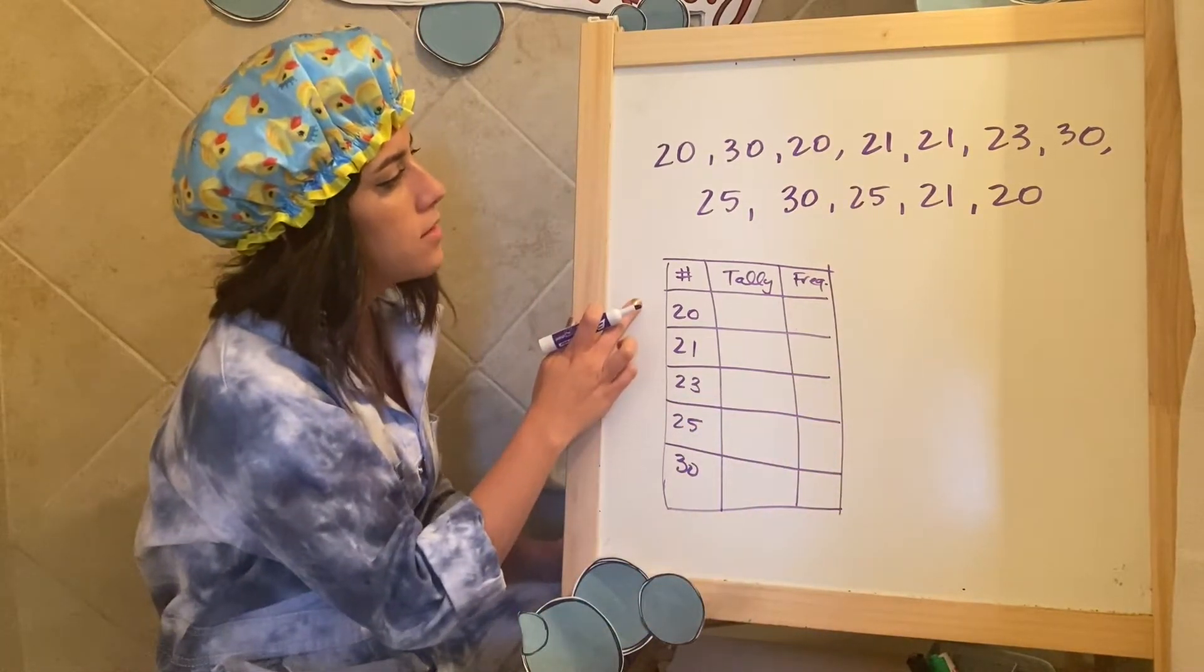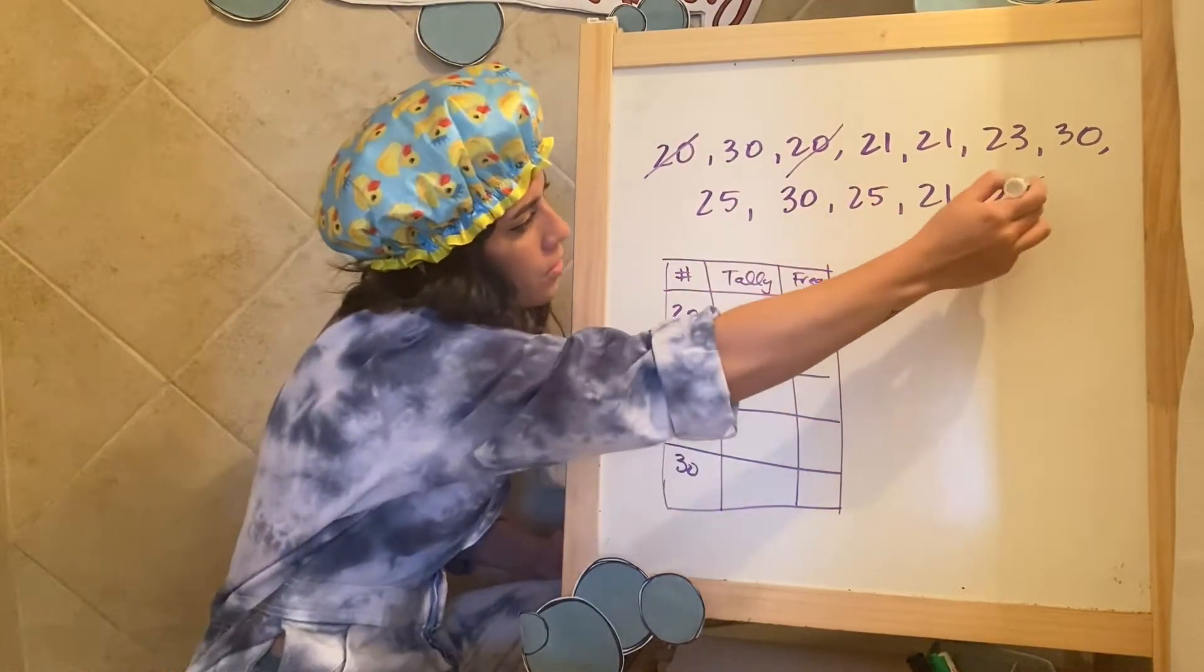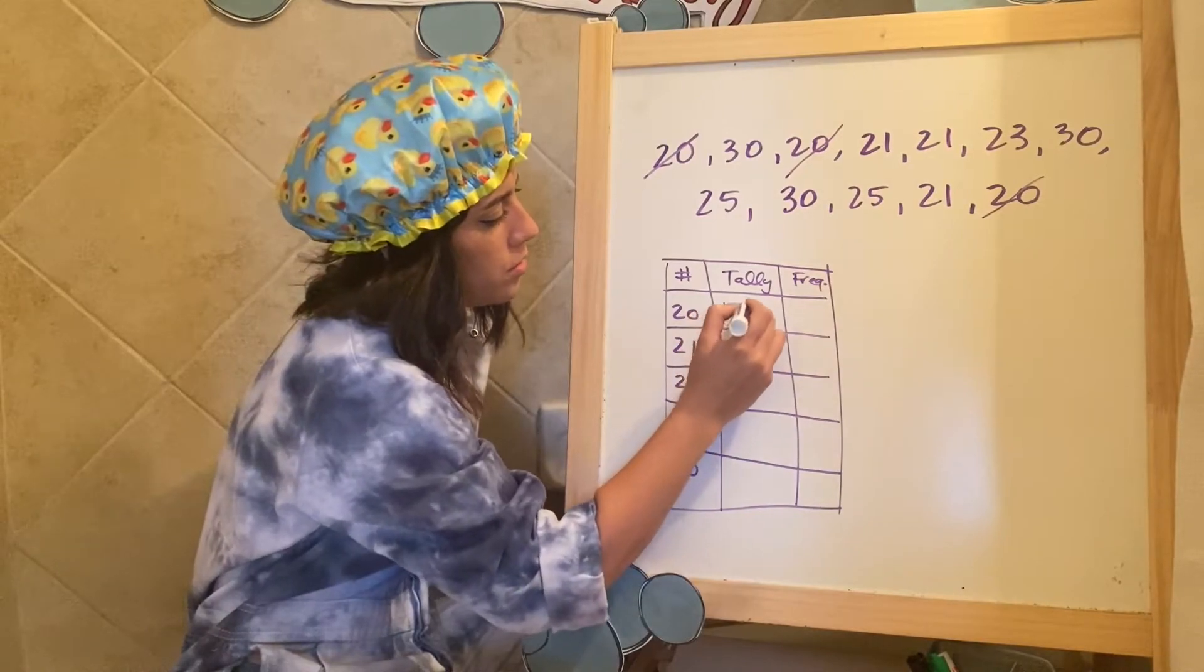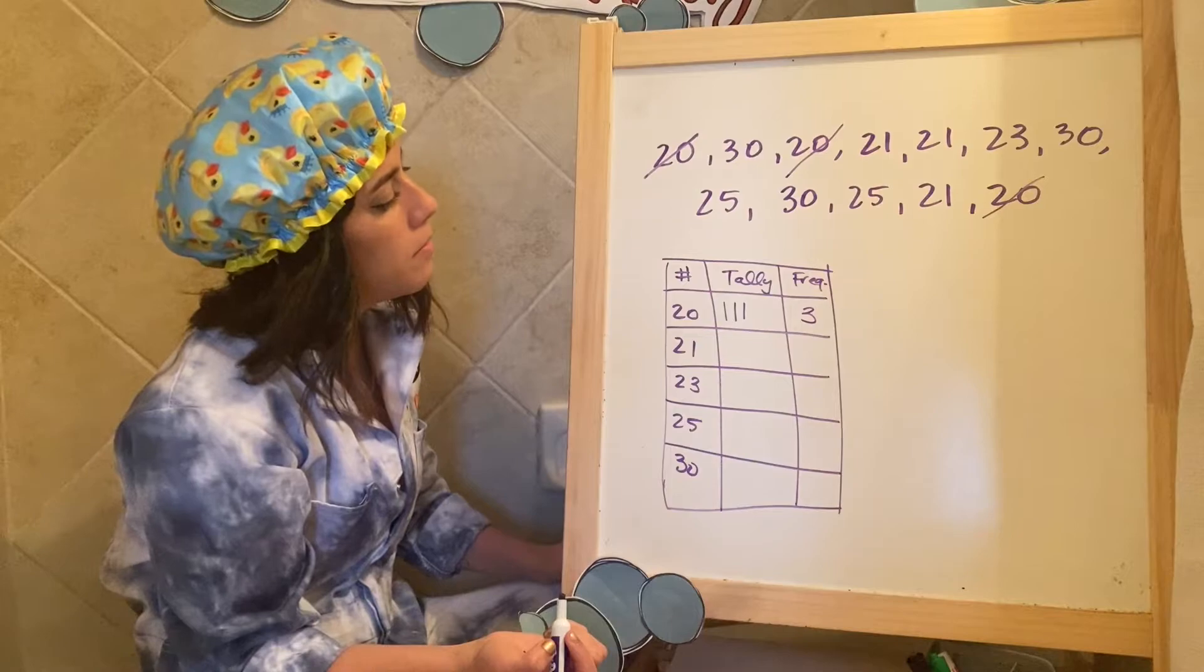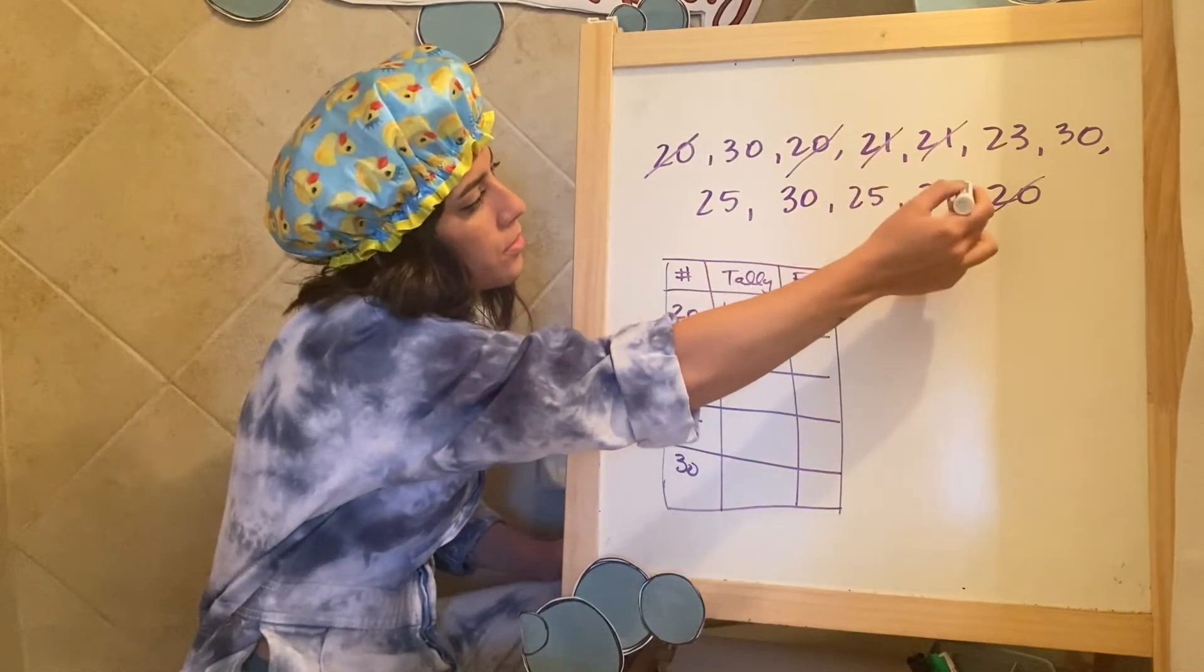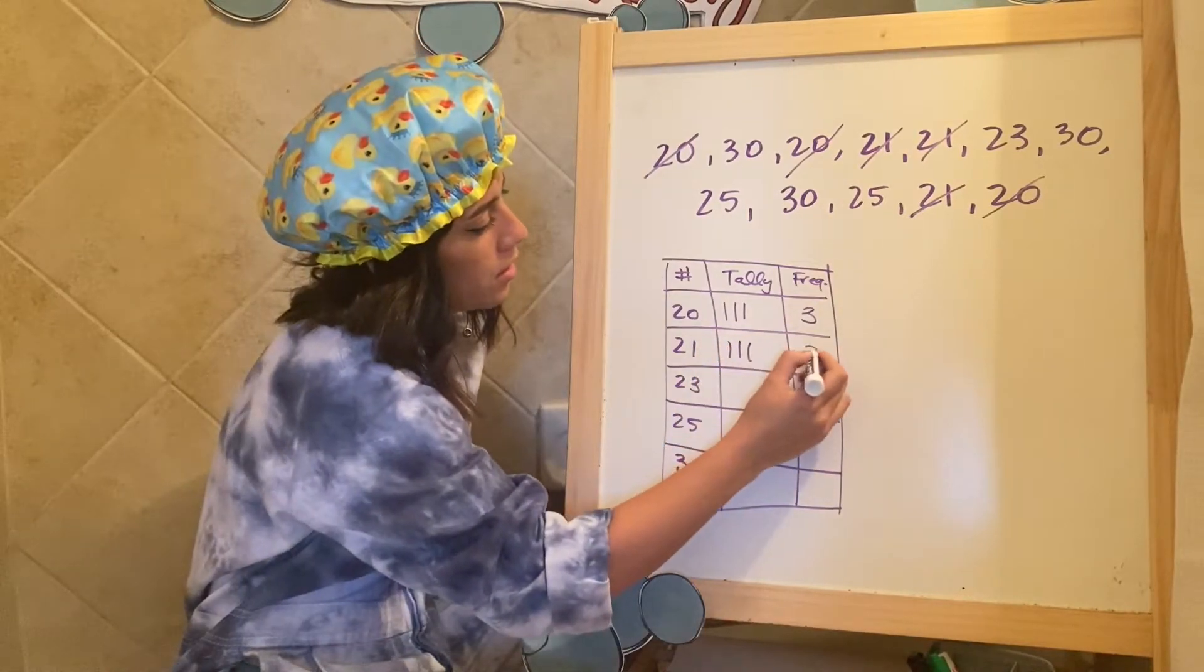Okay. How many 20s do I see? That's one, two, three. So there are one, two, three. I see three. I see three 20s. How many 21s? One, two, three. Did I miss any? No. One, two, three. Okay.